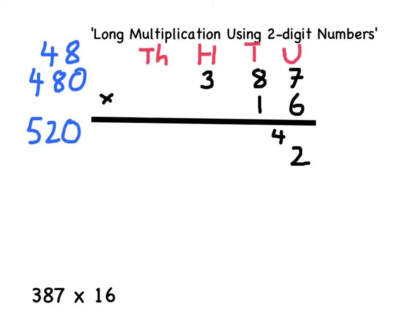I can represent the 20 of 520 easily in the tens column by putting a 2, but to show the 500 part I must again write a small 5 halfway between the hundreds and the tens column to remind me to use it during the next step.